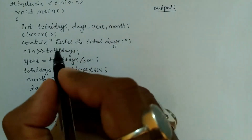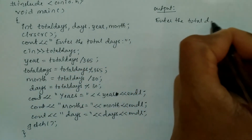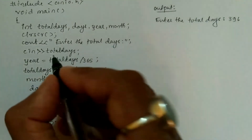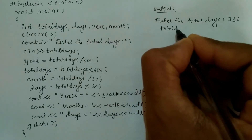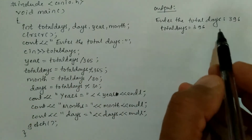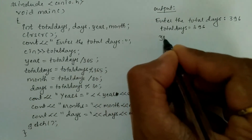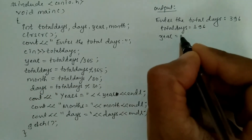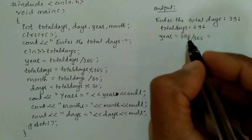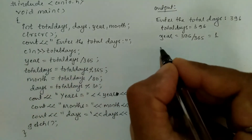Now let us take an example. Once we compile and run this program it will ask the user to enter the total days. For example, I'm going to enter 396. So total_days = 396. Now calculating year: year = 396 / 365. Since 365 ones are 365, this returns 1, so one will be stored in year.